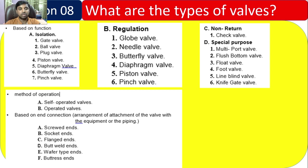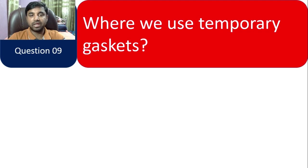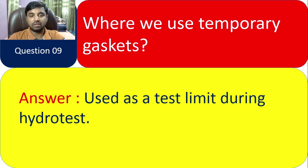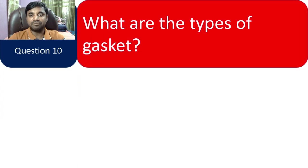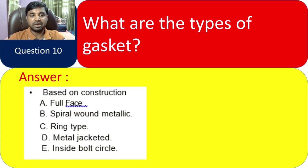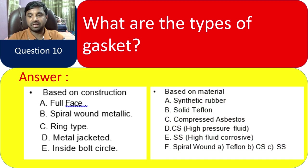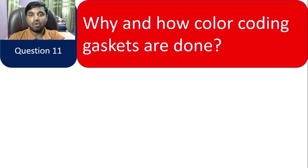Question 9: Where do we use temporary gaskets? Temporary gaskets are used as a test limit during hydro test. Question 10: What are the types of gaskets? Based on construction: full face, spiral wound, metallic ring type, metal jacketed inside bolts. Based on material: synthetic rubber, solid PTFE, compressed asbestos, CS, SS, and spiral wound PTFE types.